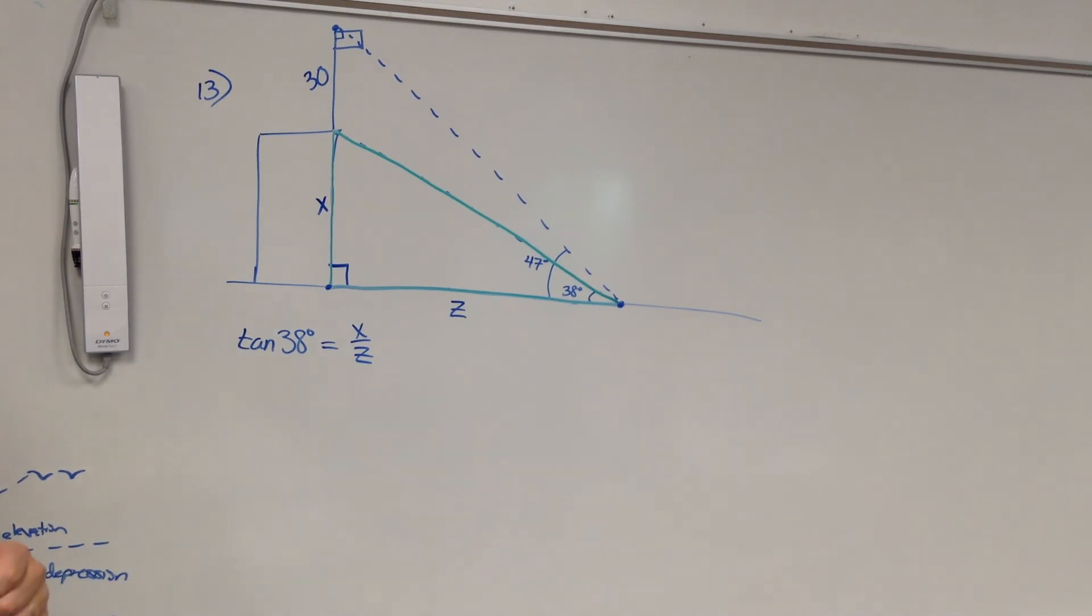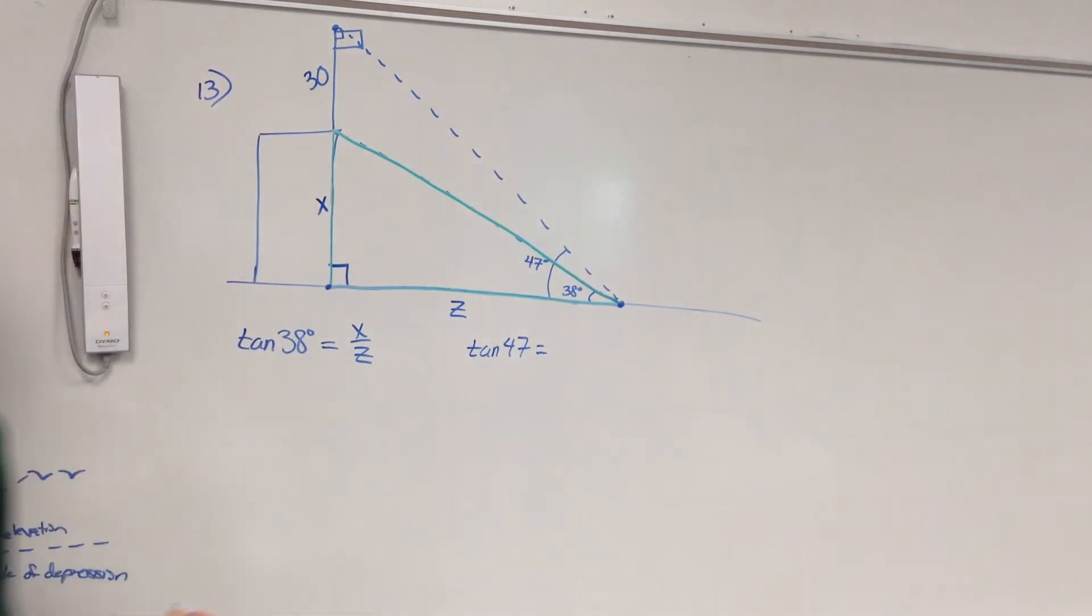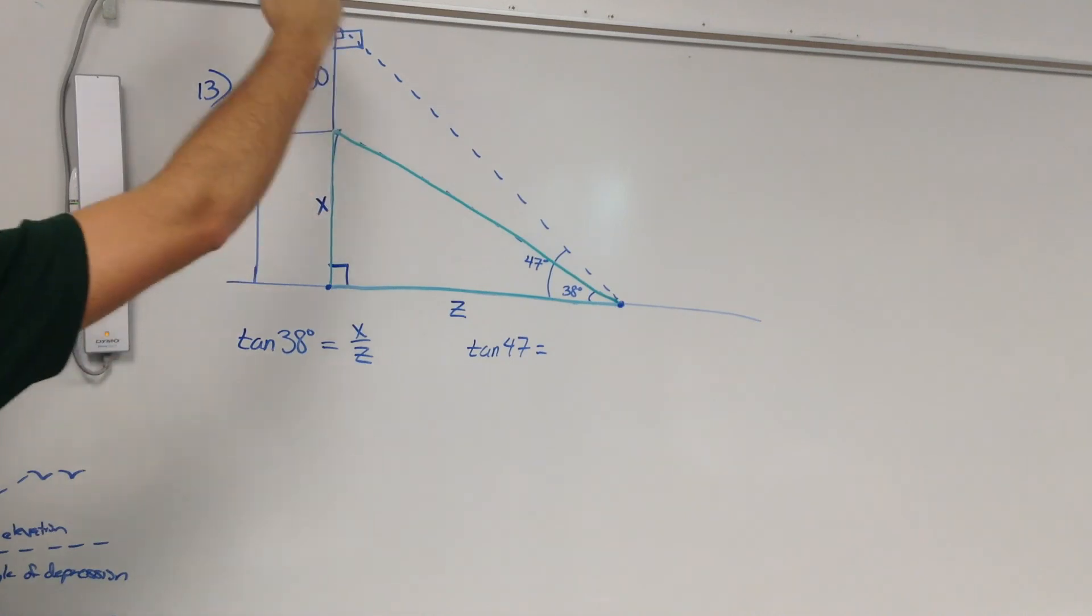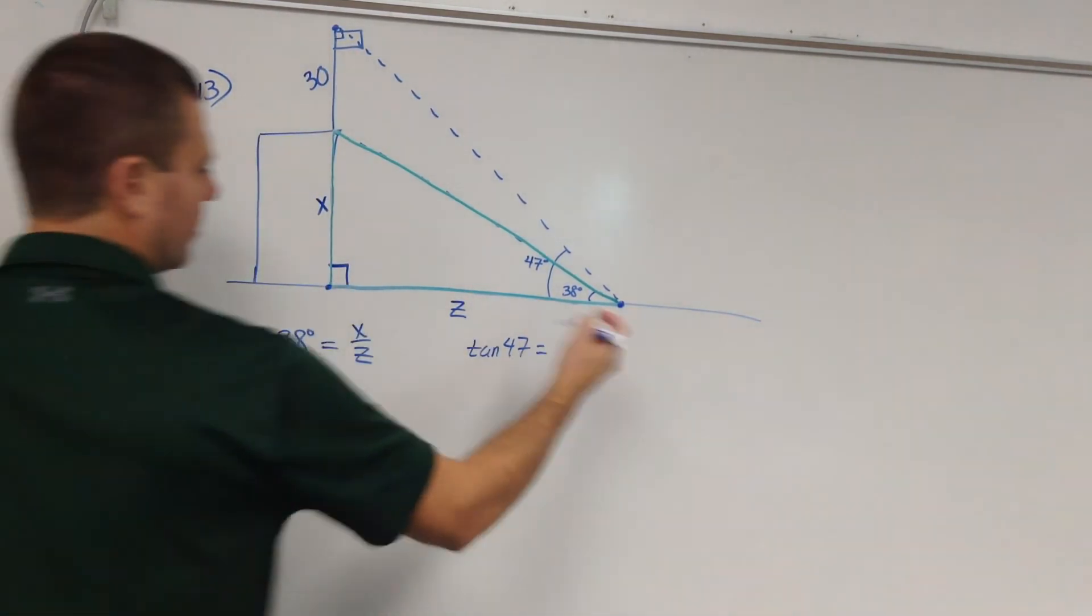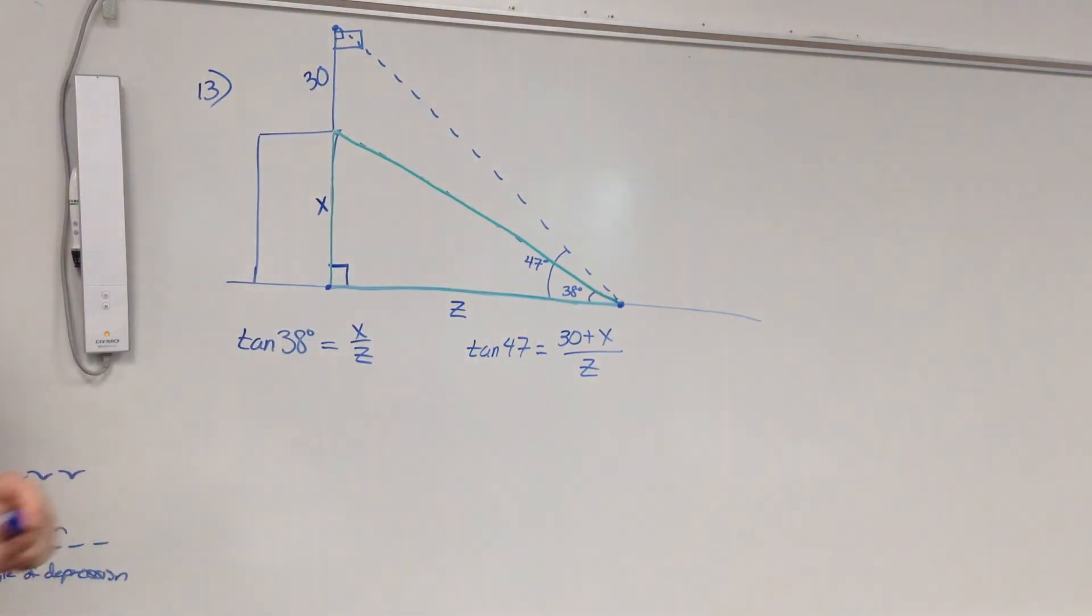Is there another equation that we could write that has both X's and Z's in it? Gwen? The tangent of 47. The tangent of 47 would equal, for me, what? 30 plus X, for me, all over Z, right? Because the length of the opposite side is 30 plus X, the length of the adjacent side is Z.